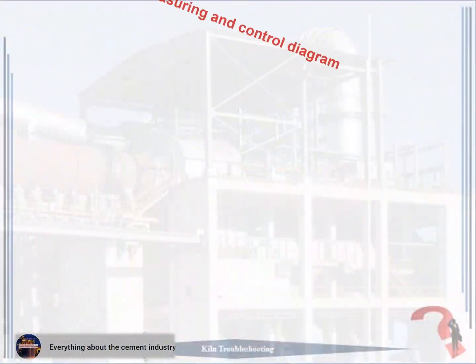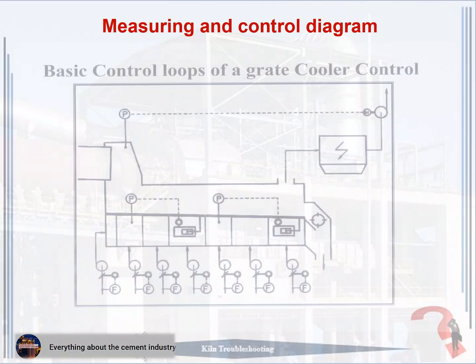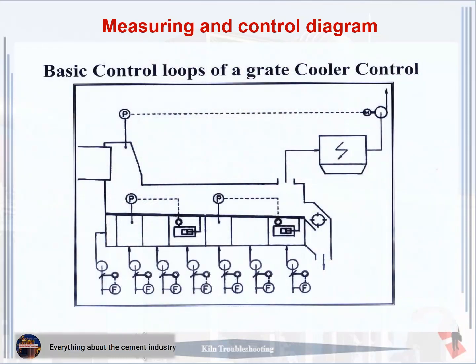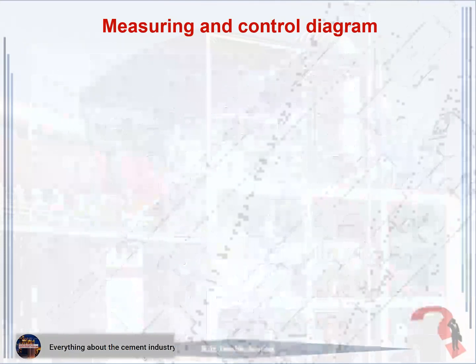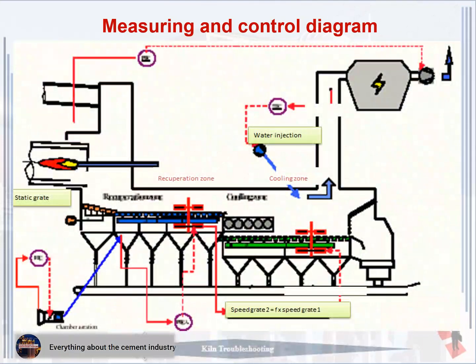Measuring and control diagram. It is extremely important for the operator to master cooler controls, because the cooler itself performs an integral part of the clinker burning process. Cooler conditions influence the burning process in the kiln and consequently the quality of the clinker. This figure shows a schematic layout of cooler controls.